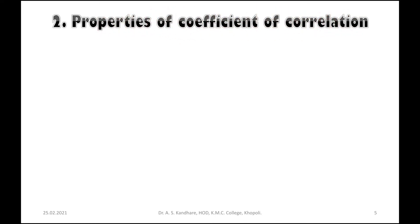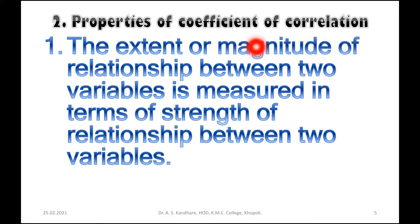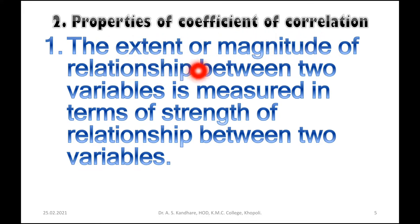The properties of coefficient of correlation: first, the extent or magnitude of relationship between two variables is measured in terms of the strength of relationship between the two variables.